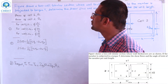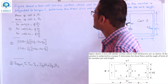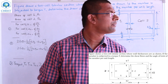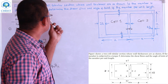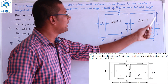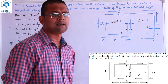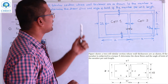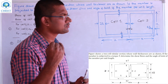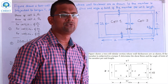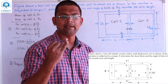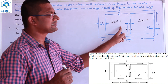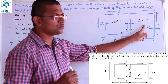The figure shows a two-cell tubular section whose wall thicknesses are as shown. It is subjected to torque T. Determine the shear flows and the angle of twist of the member per unit length. In this body we have cell 1 and cell 2.